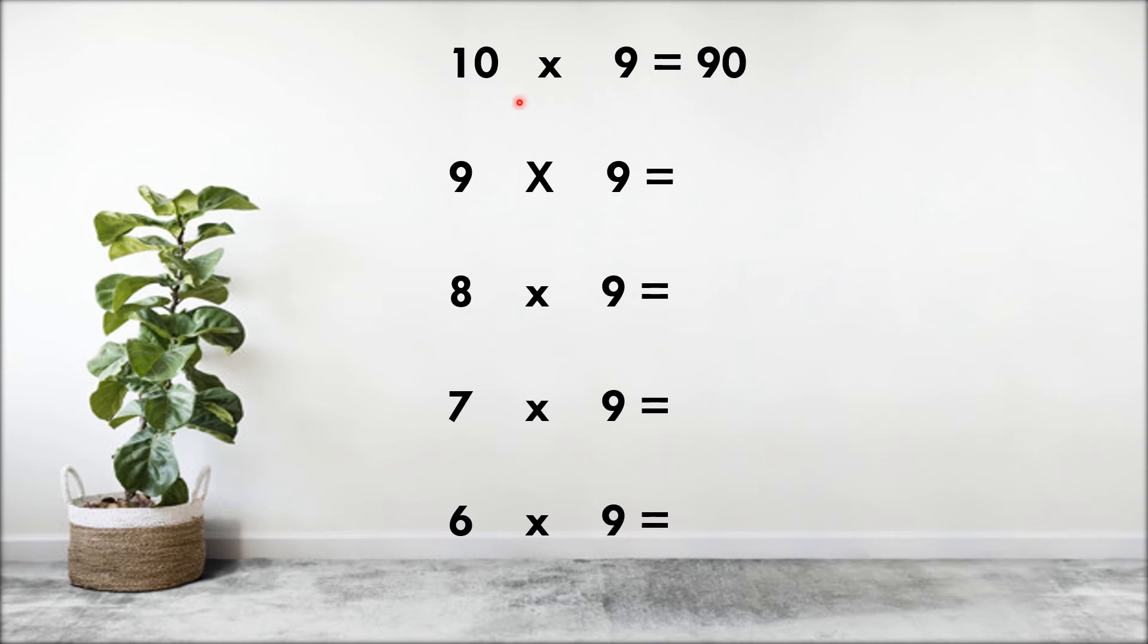For example, 10 into 9 equal to 90. If you add 9 plus 0 is 9. Can we check for the remaining numbers? For 9 into 9, predecessor of 9 is 8, so 9 minus 8 is 1, so 9 into 9 is 81. So 8 plus 1 is again 9.